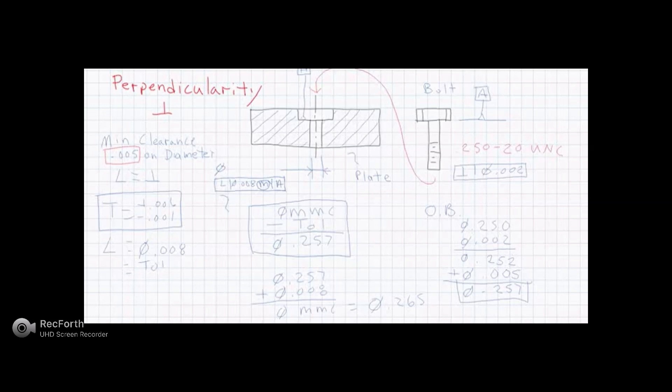So our diameter, my MMC is going to be the lower limit, which is 265 thousandths, point 2 6 5. And then our upper limit looks like we're going to allow a variability of 7 thousandths total. So I would add 7 thousandths to that 265 thousandths. And so that's going to be point 2 7 2. Okay.